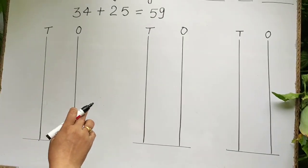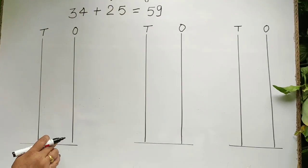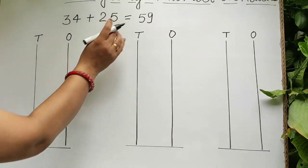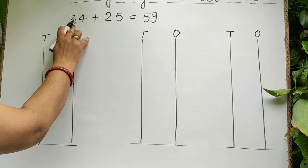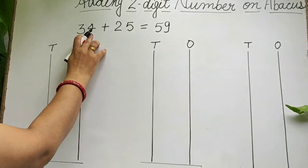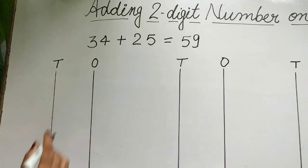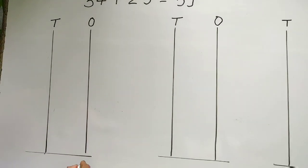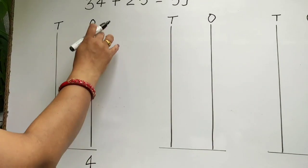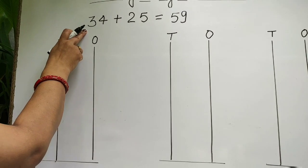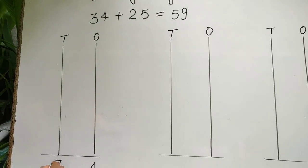Children, let's draw beads on the abacus rod. Three tens, four ones is equal to 34. So write 4 under the ones and 3 under the tens.